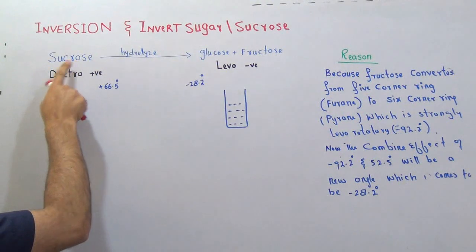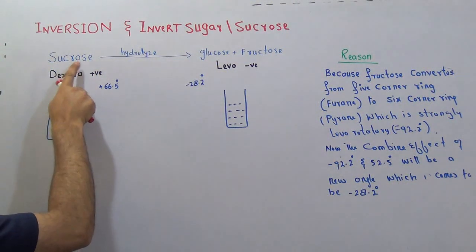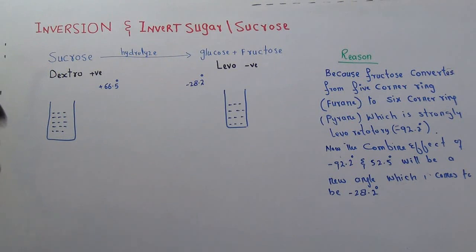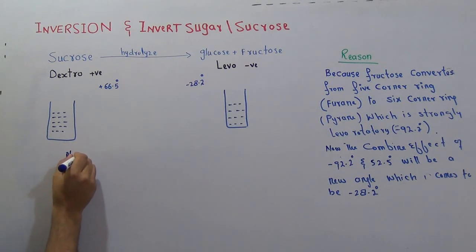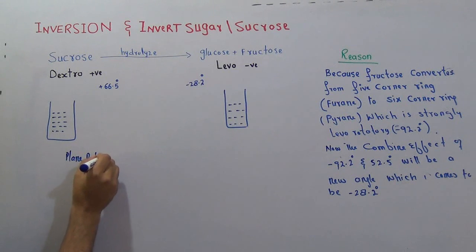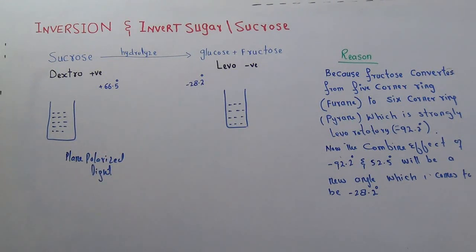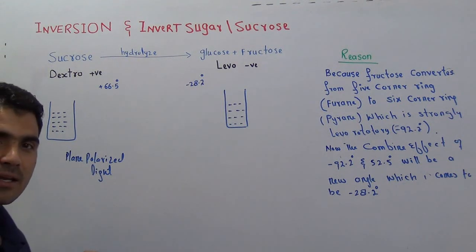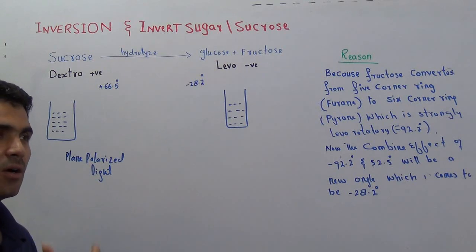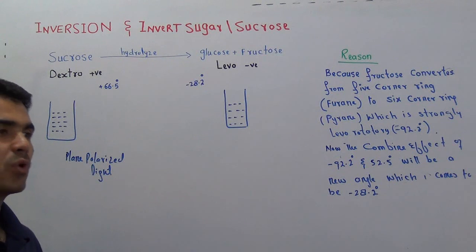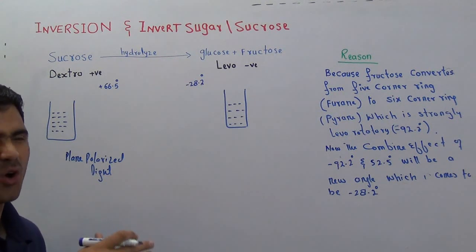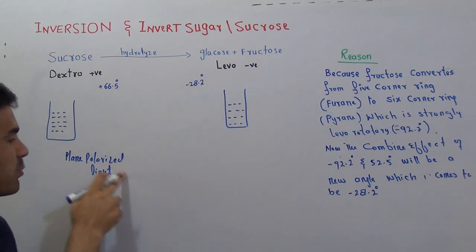Here is sucrose, and if you pass plane polarized light through the sucrose solution — plane polarized light is a light that travels in only one direction with only one wavelength, because ordinary light travels in more than one direction and has more than one wavelength. So we convert ordinary light into plane polarized light.